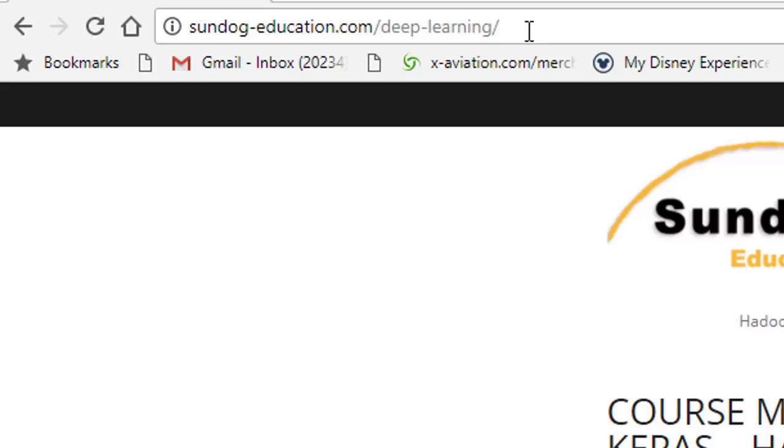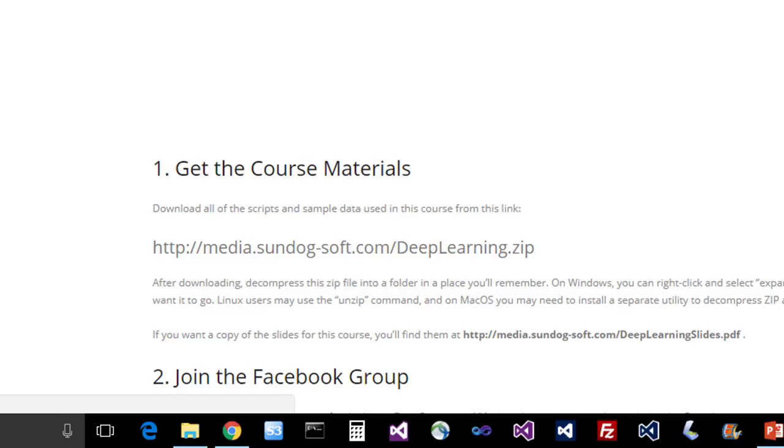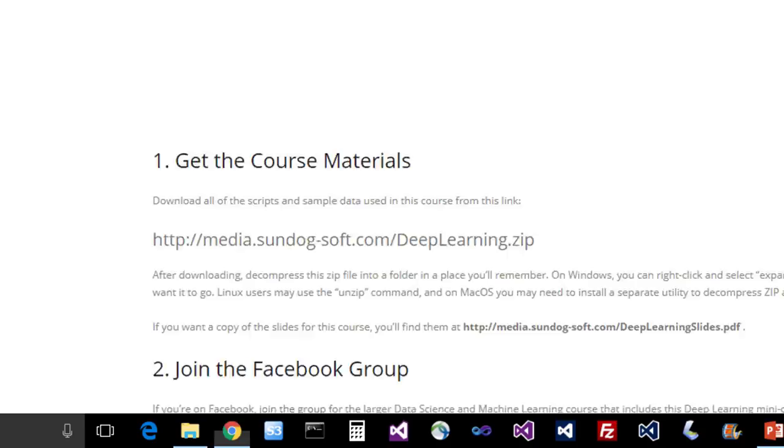From here you can find this link for the course materials. This contains all of the scripts that are used in this section of the course. It's a zip archive, so if you need a unzip utility, which you might on macOS, you need to install that first to decompress that file that you get. And there's also a link here to the course slides if you want to keep those around for future reference as well. There's also a Facebook group for the larger course on data science and machine learning.